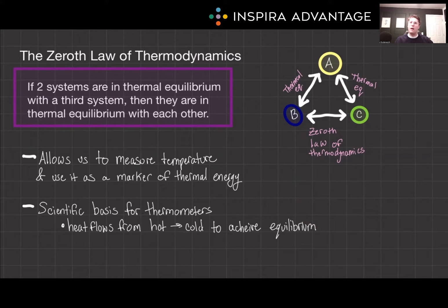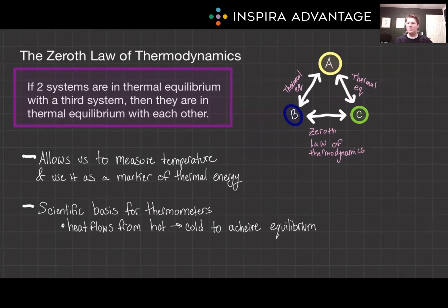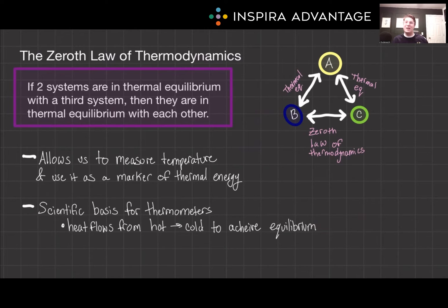Why is this important? It allows us to measure temperature and use it as a marker of thermal energy. It's the scientific basis for thermometers and the idea that heat flows from hot to cold to achieve equilibrium. Weirdly enough, this is a question the MCAT loves asking. It will literally ask you what a thermometer represents with regards to the thermodynamic laws, and you need to know it's the zeroth law. Make sure that is on your flashcards.